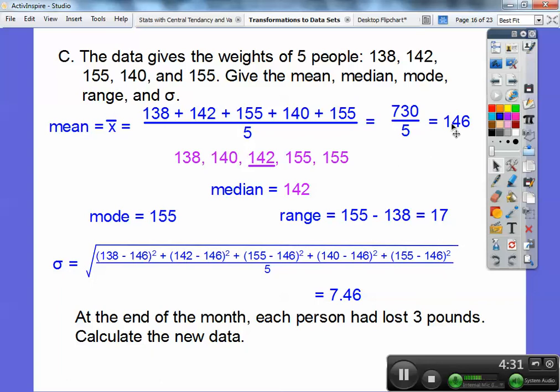So I'm going to take off three. The mean will be this number. I'm sorry, 143. Take off three of this one, the median will then become 139. Take off three of this one and it'll be 152. But the range will stay the same, and so will the standard deviation. They'll stay the same. So there you go right there.